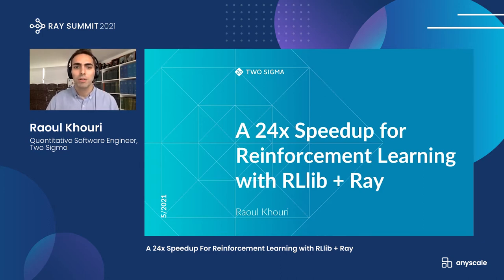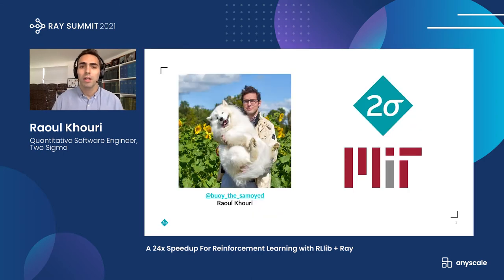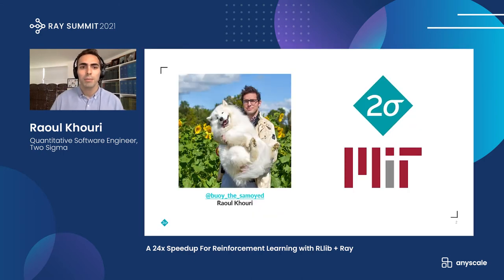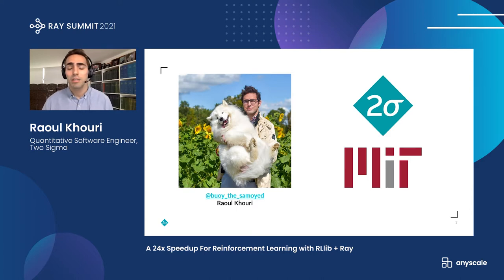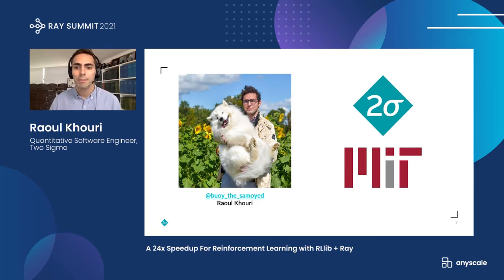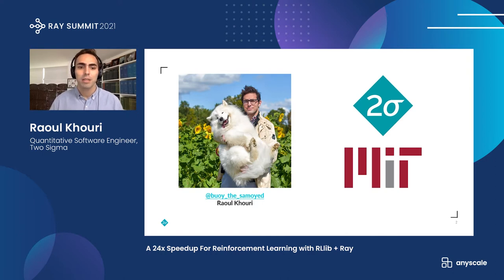I'm a quantitative software engineer on the AI core team at Two Sigma. On that team, I work on applied research as well as consulting with other teams around the company. A lot of that applied research is in reinforcement learning. Before my time at Two Sigma, I studied my undergrad and master's at MIT in AI and computer science.